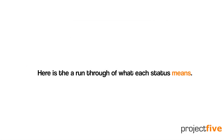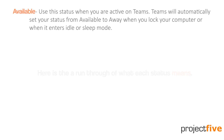Here is a run-through of what each status means. Available is what you should set your status to if you're active on Teams and you do not have anything in your calendar at that particular time. It's worth noting that Teams will automatically set your status from Available to Away when you lock your computer, or when it enters idle or sleep mode. If you use the Teams app on your mobile phone, this will happen if the app is in the background.